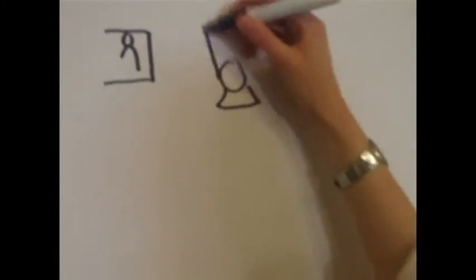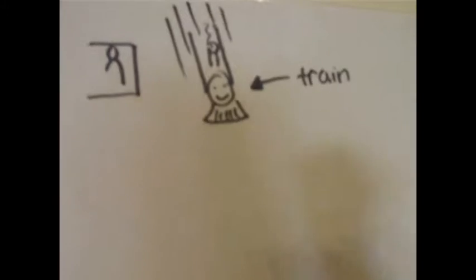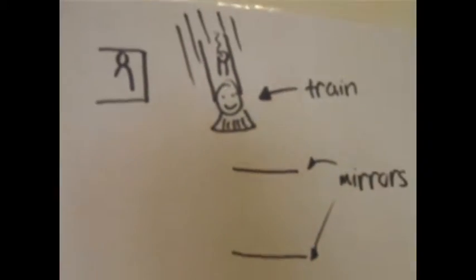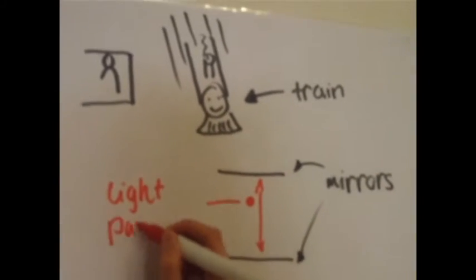Imagine someone standing on a train platform watching a train that has a light clock on it. This is a device that involves a beam of light bouncing between two mirrors to make even ticks.